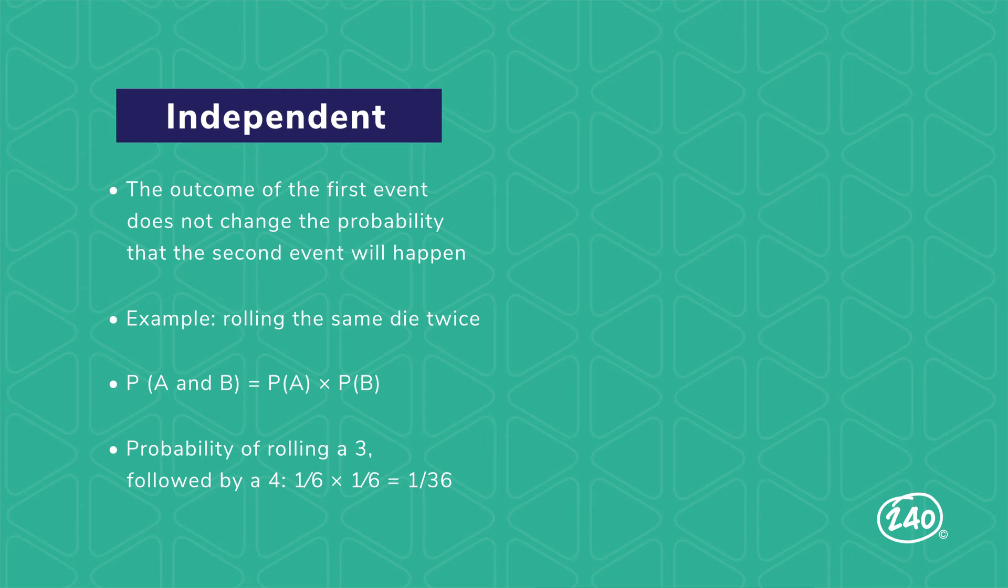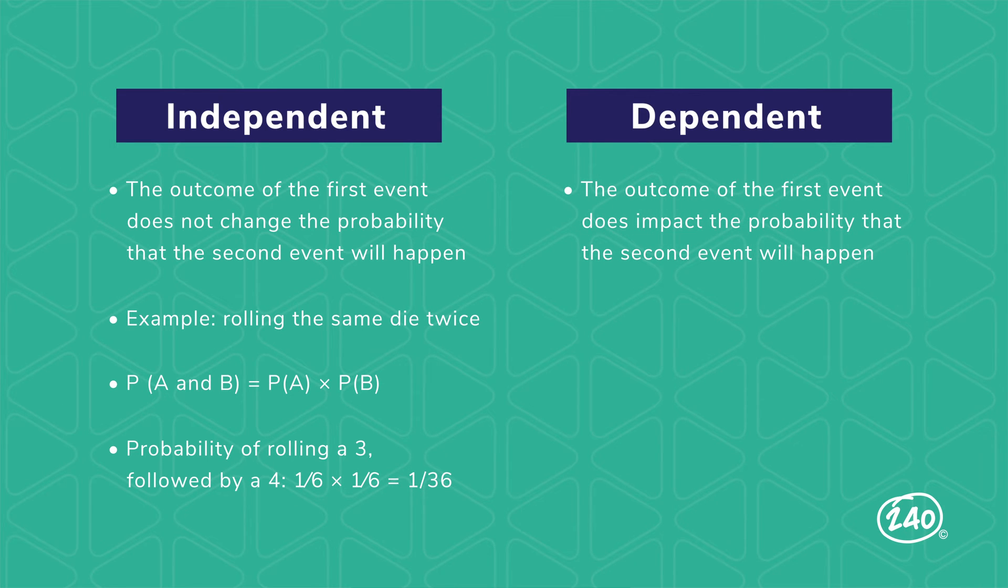But in a dependent conditional probability event, the result of the first event changes the probability of the second. So if I'm trying to pull two aces in a row from a deck of cards, I have a 4 out of 52, or 1 in 13, chance of pulling an ace my first time. But once I pull that first ace, the odds change. Now there are only 51 cards in the deck, and only 3 of them are aces. To calculate the probability of a dependent compound event, multiply the probability of event A times the probability of event B after event A has happened. So the probability of pulling two aces in a row from a single deck is 1 in 221.